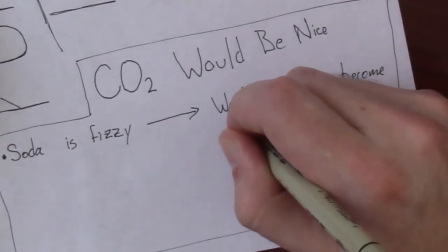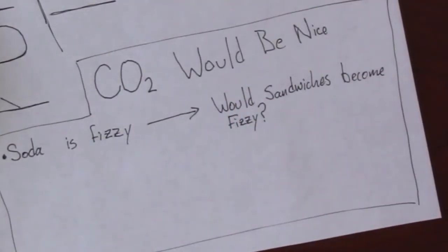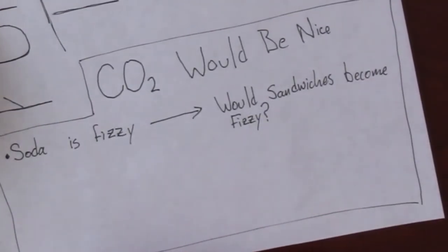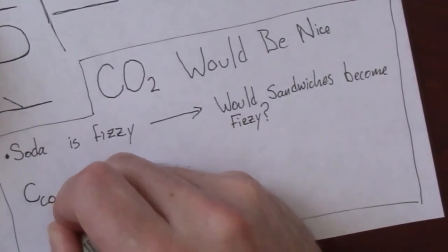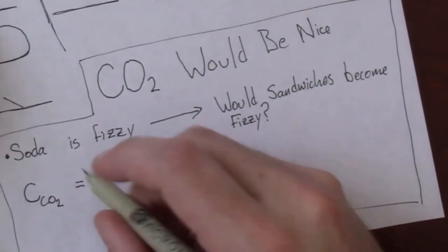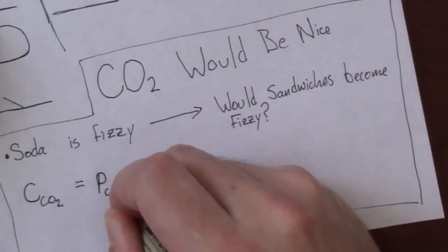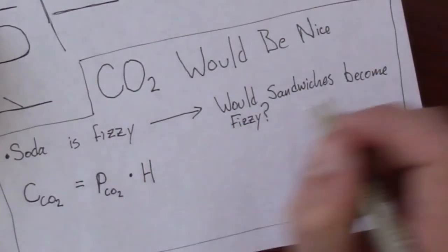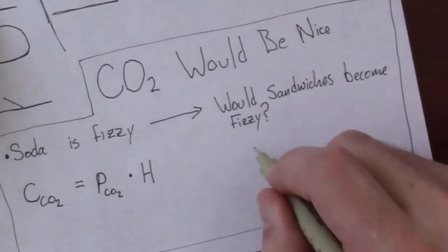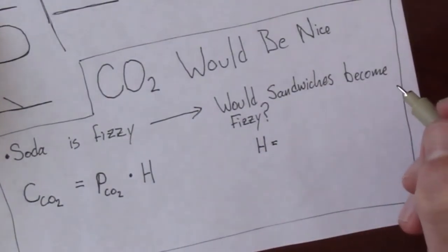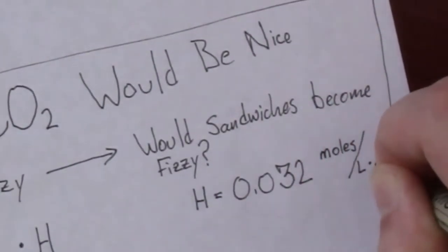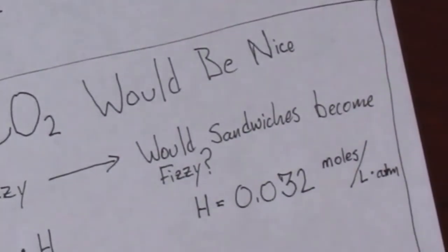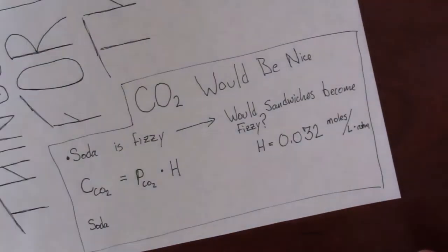Anyways, with this question there's some equations that we can look at to give us a ballpark estimate of how fizzy a sandwich might become. The equation is called Henry's law, and what it says is that the concentration of CO2 in your water is equal to the partial pressure of the CO2 times Henry's constant, which for CO2 in water is 0.032 moles per liter atmosphere.